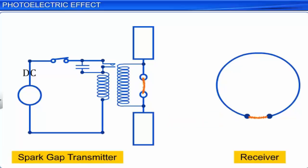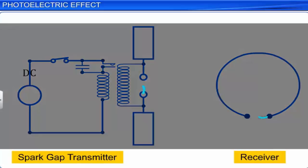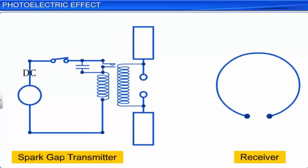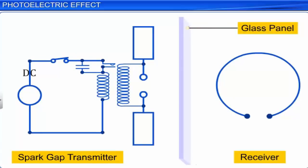When a spark occurs at the transmitter, it produces electromagnetic waves, which are detected by the receiver indicated by the sparking in its gap. To be able to see the spark better, he had placed the apparatus in a darkened box. However, to his surprise, Hertz observed that the maximum length of the spark was reduced when in the box. When he placed a glass panel between the source of the electromagnetic waves and the receiver,